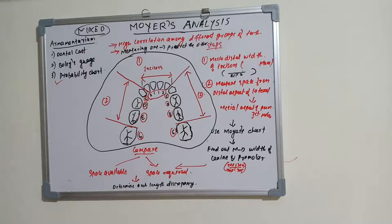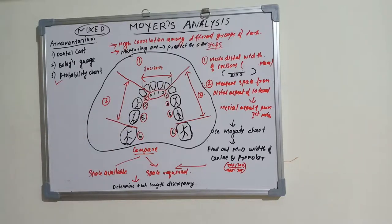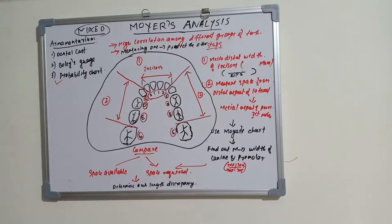This is a mixed dentition analysis. The mandibular incisors are chosen because they erupt early in the mouth, can be measured accurately, and are directly involved in most space management problems. Maxillary incisors are not chosen because their variability in size and correlation with other tooth groups have lower predictive value.